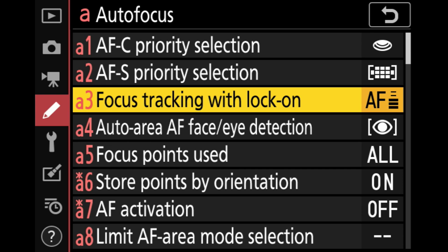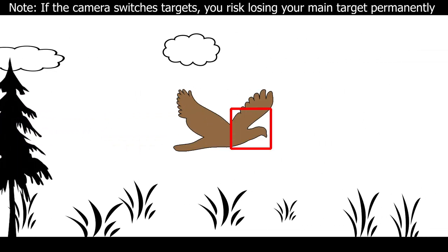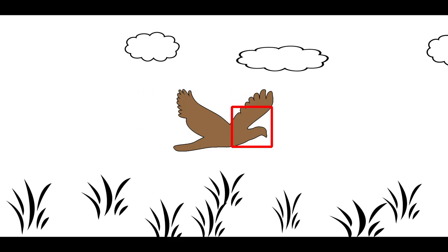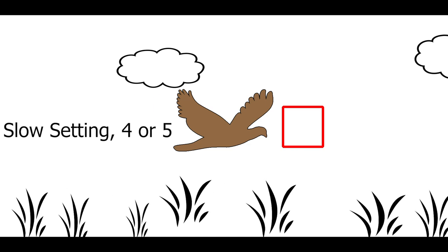Next we have focus tracking with lock on. This option tells the camera what to do if the AF area detects a drastic change in distance while tracking a subject. For example, maybe you're tracking a bird and a tree comes between you — how long should the camera wait before giving up on the bird and focusing on the tree? A setting of one tells the camera not to wait at all; a setting of five tells it to wait as long as possible. It also works the other way: if the AF area accidentally slips off a subject, this determines how long the camera waits before switching to a new subject.